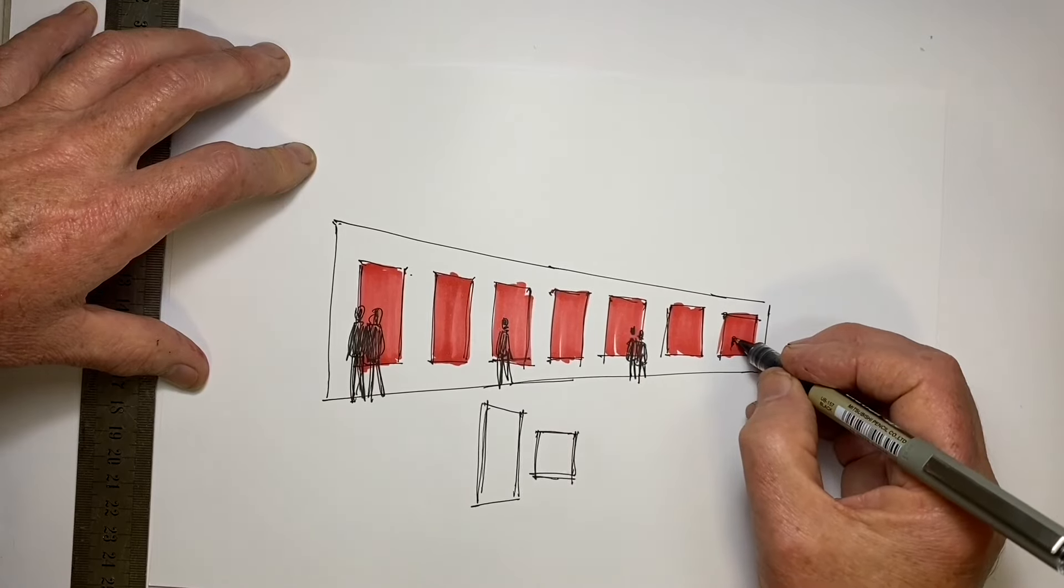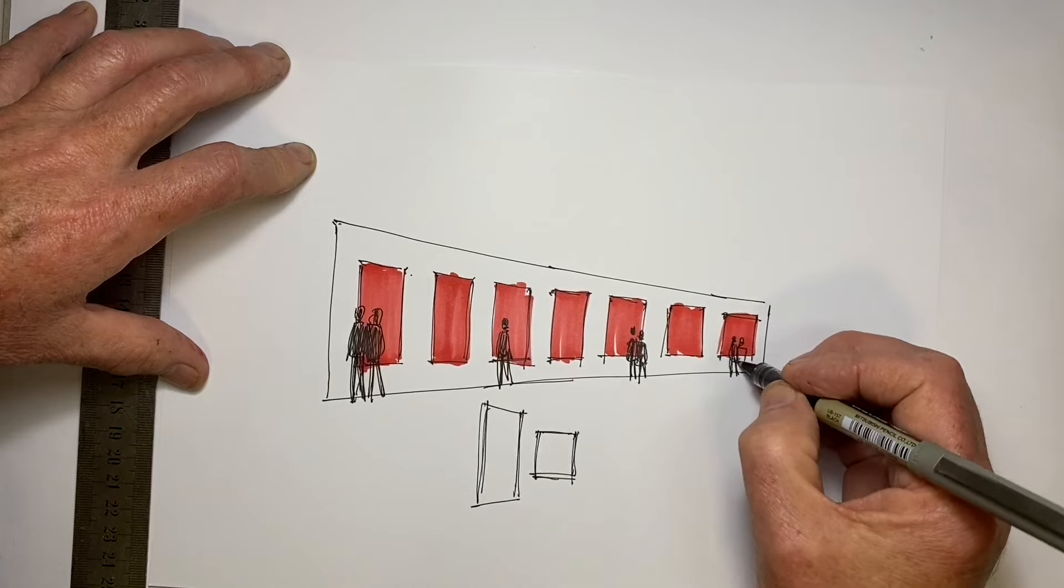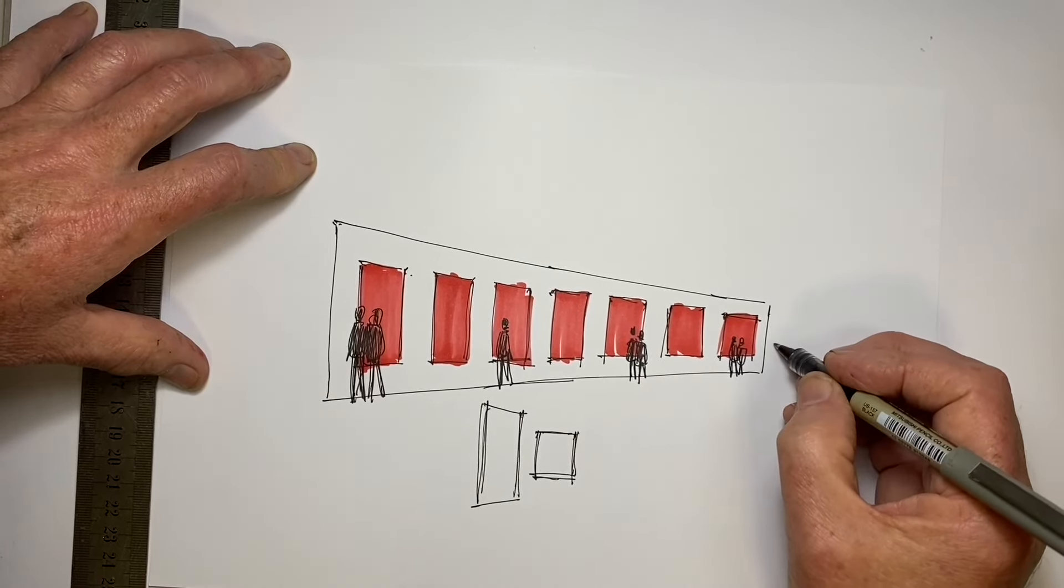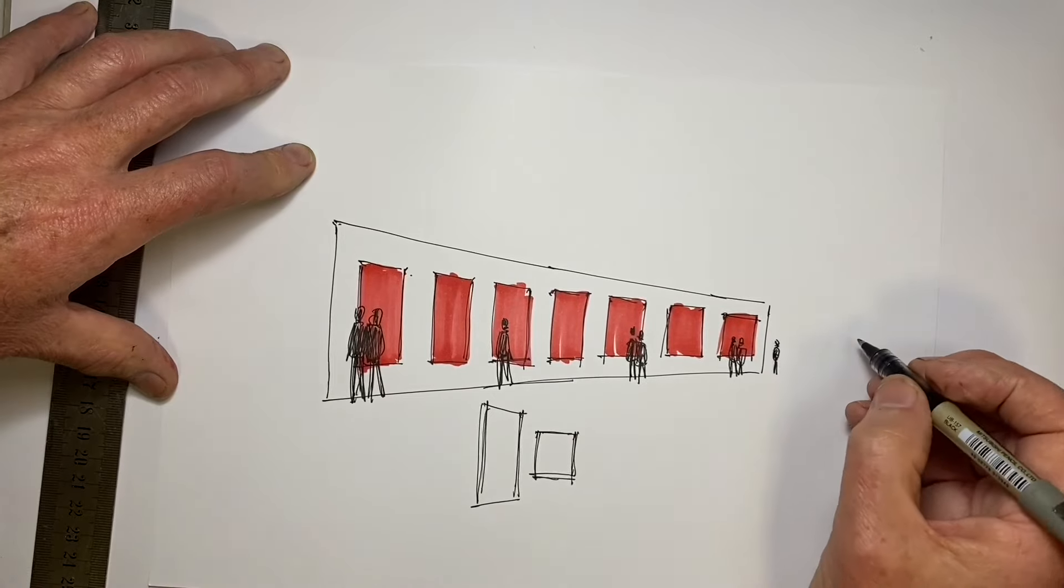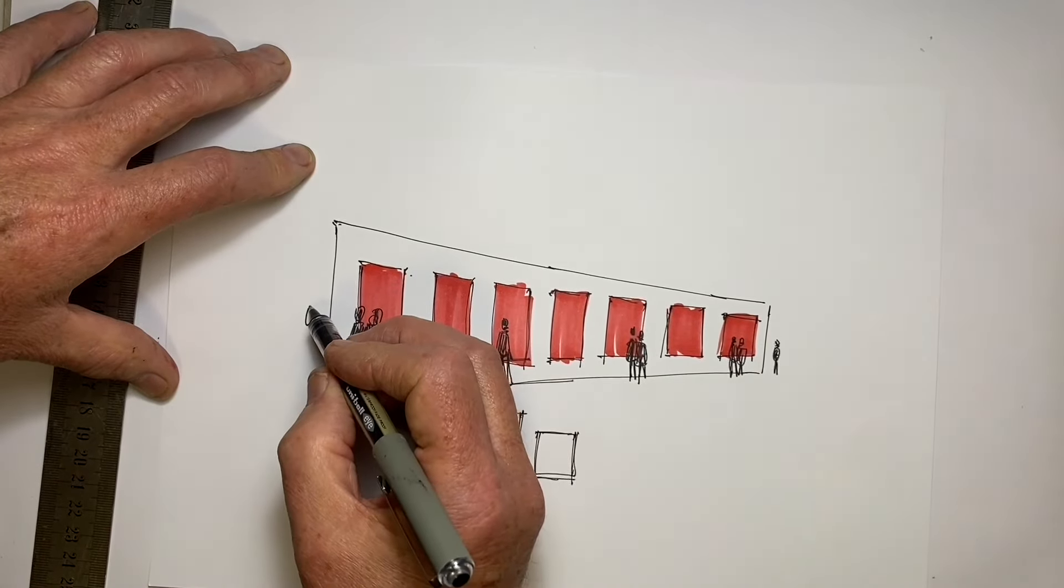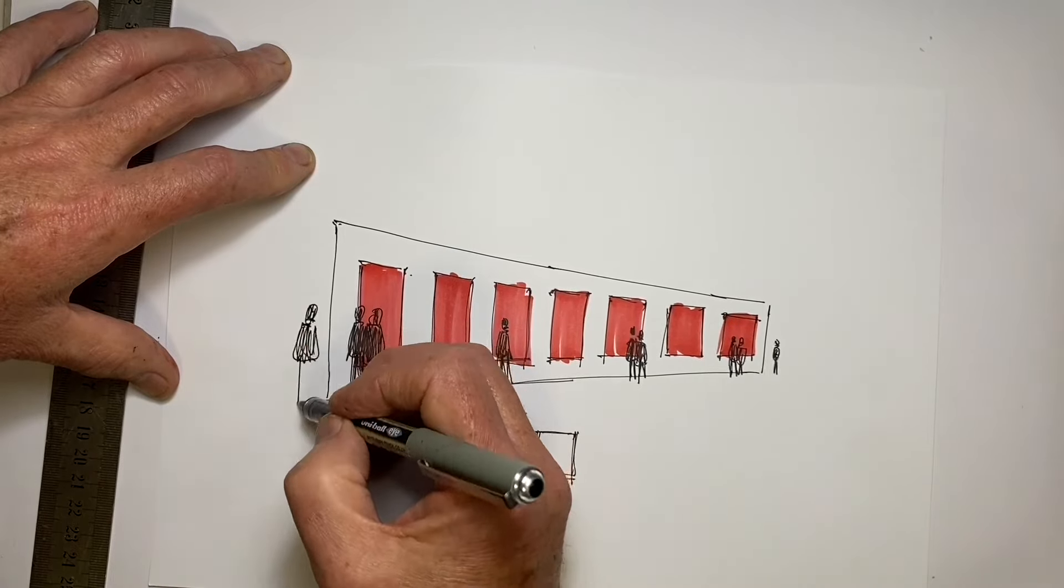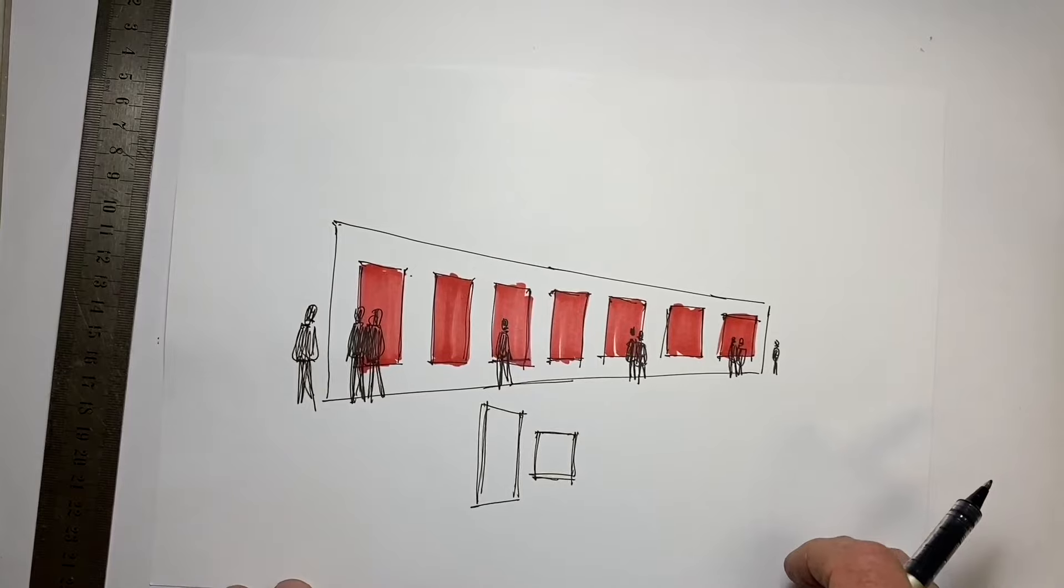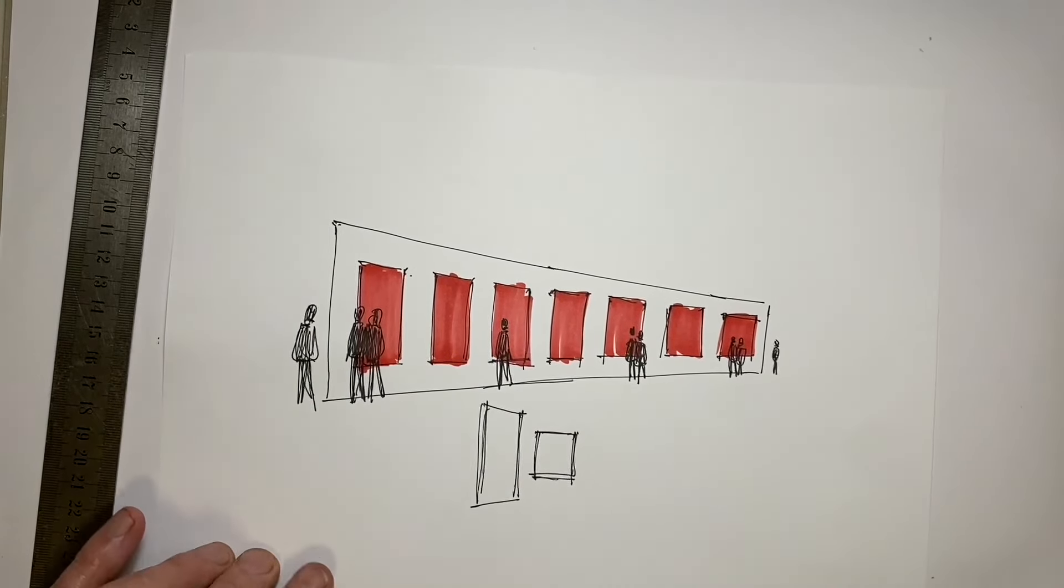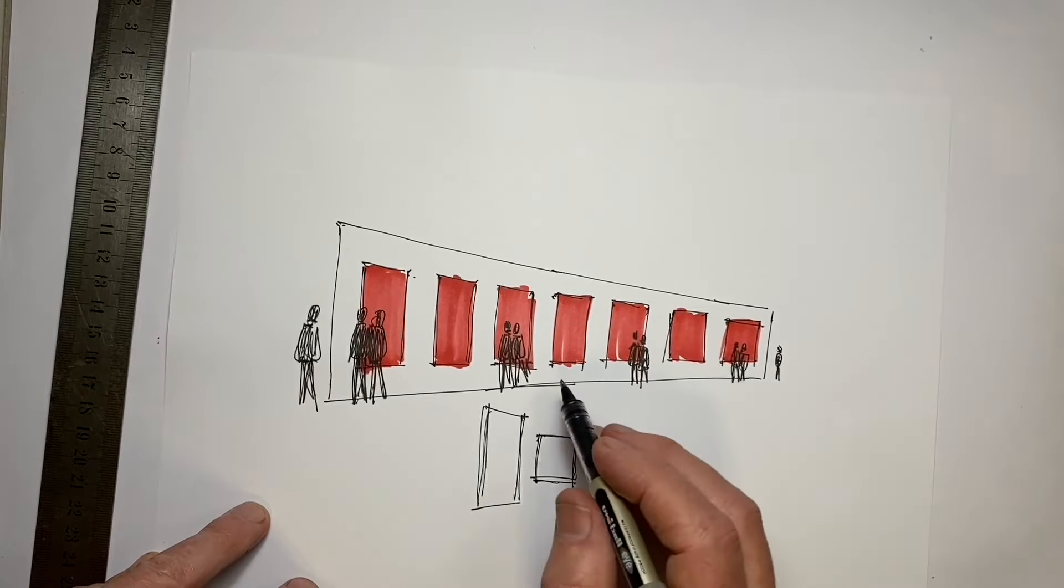Now if this is all correct, then the figures proportionately should fit in front of the windows the same - they should be covering the same amount of window. But we see the ones at the end look a lot smaller than the ones closest to us on the left, and there doesn't seem to be a correct correlation between those closest ones and even the ones in the middle. So the scale is not working here properly, which is always an indication that something's not right with the perspective.